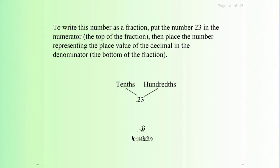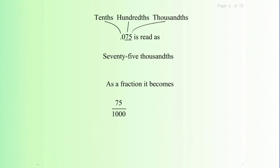Then place the number representing the place value of the decimal in the denominator. Point zero seven five (.075) is read as seventy-five thousandths. As a fraction it becomes 75/1000. You should then reduce your fraction to lowest terms.